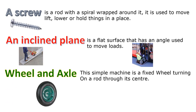A screw is a rod with a spiral wrapped around it. It is used to move, lift, lower or hold things in place. An inclined plane is a flat surface that has an angle, used to move loads. Wheel and axle: this simple machine is a fixed wheel turning on a rod through its centre.